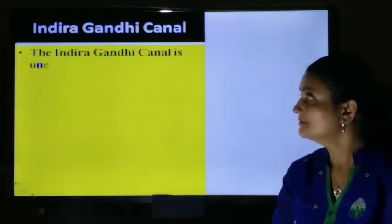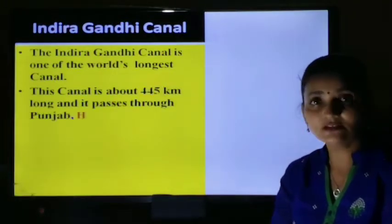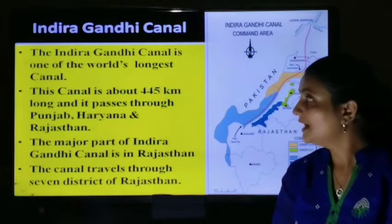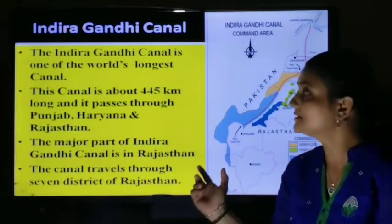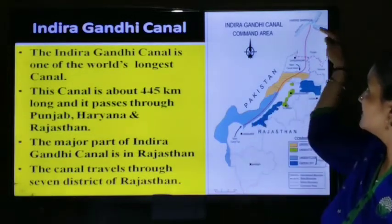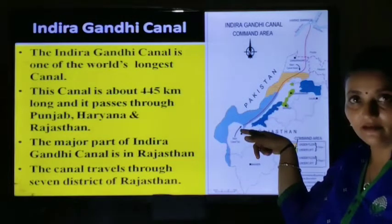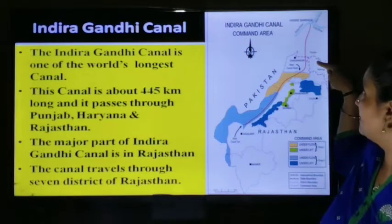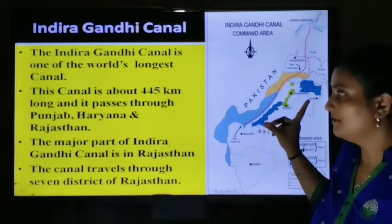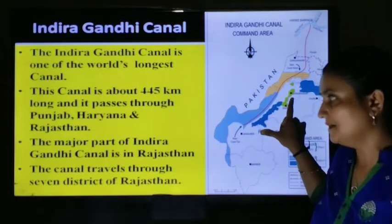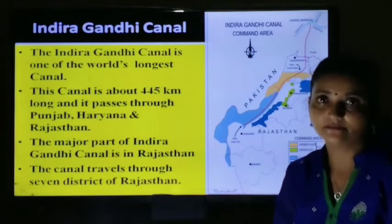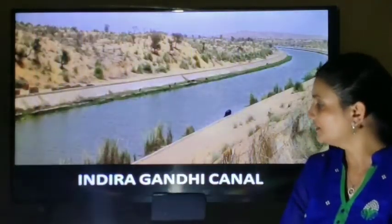Let's start with the first point — Indira Gandhi Canal. The Indira Gandhi Canal is one of the world's longest canals. This canal is about 445 km long and passes through Punjab, Haryana, and Rajasthan. On this map, the red line shows the Indira Gandhi Canal. It starts from the Satlaj River and passes through Punjab, Haryana, and Rajasthan. The major part of the canal is in Rajasthan, travelling through seven districts. Here is a picture of the Indira Gandhi Canal.